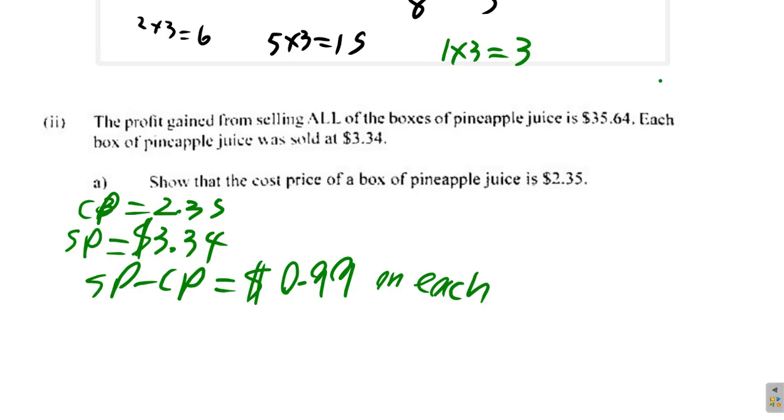Now, we want to show here that the price of a box of pineapple juice is $2.35. So one thing I can do is find the selling price, and then show that the number of pineapple juice being sold, the number of boxes, is a whole number. It's an integer.